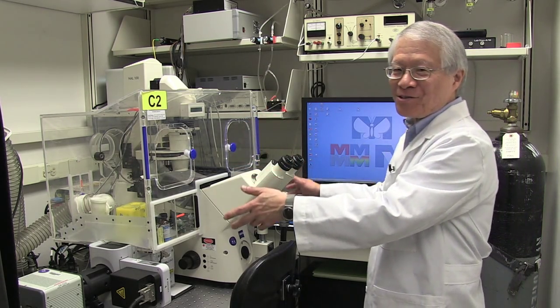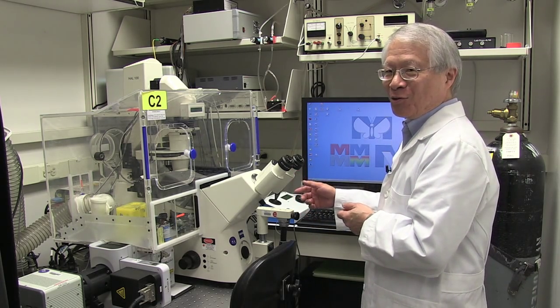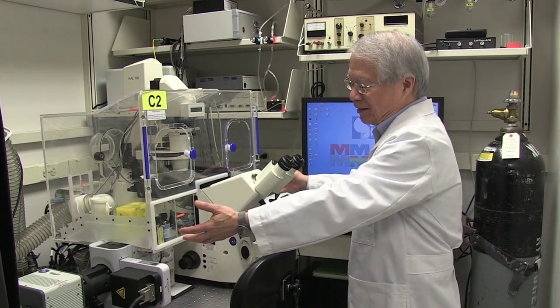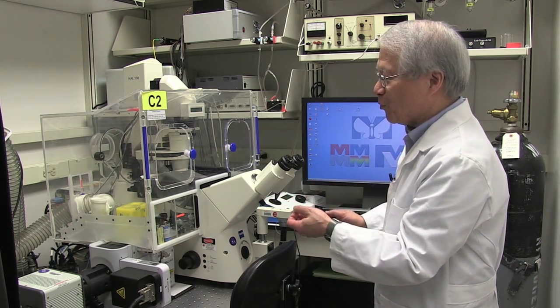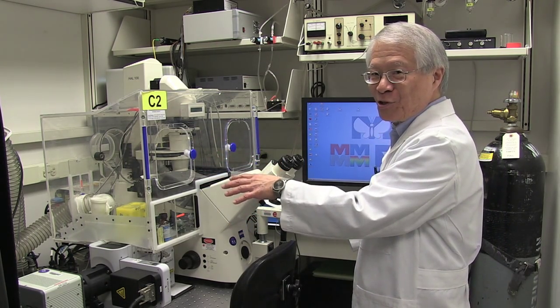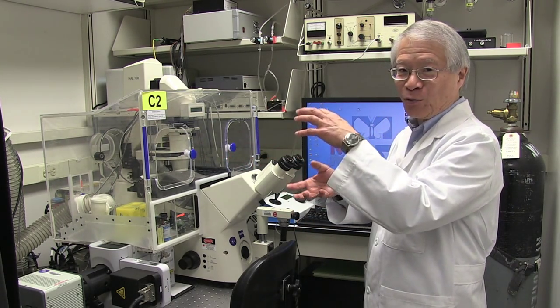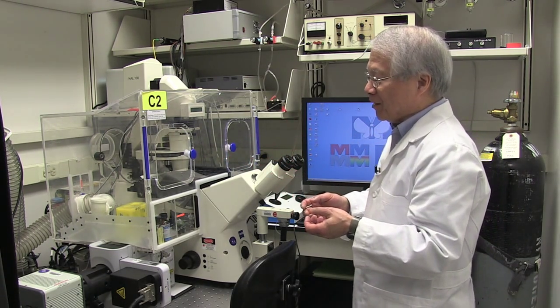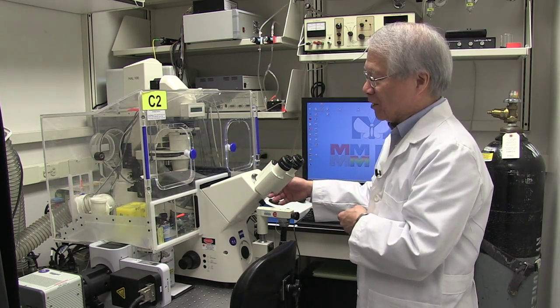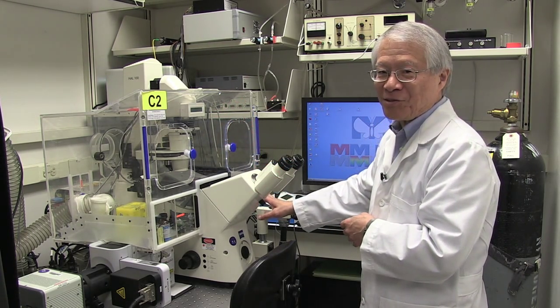Here's one of our microscopes. It's a spinning disk confocal microscope, and it's surrounded by an environmental box where we can maintain constant temperature and humidity and film three-dimensional cultures, for example, cells or developing organs in this environmental chamber.